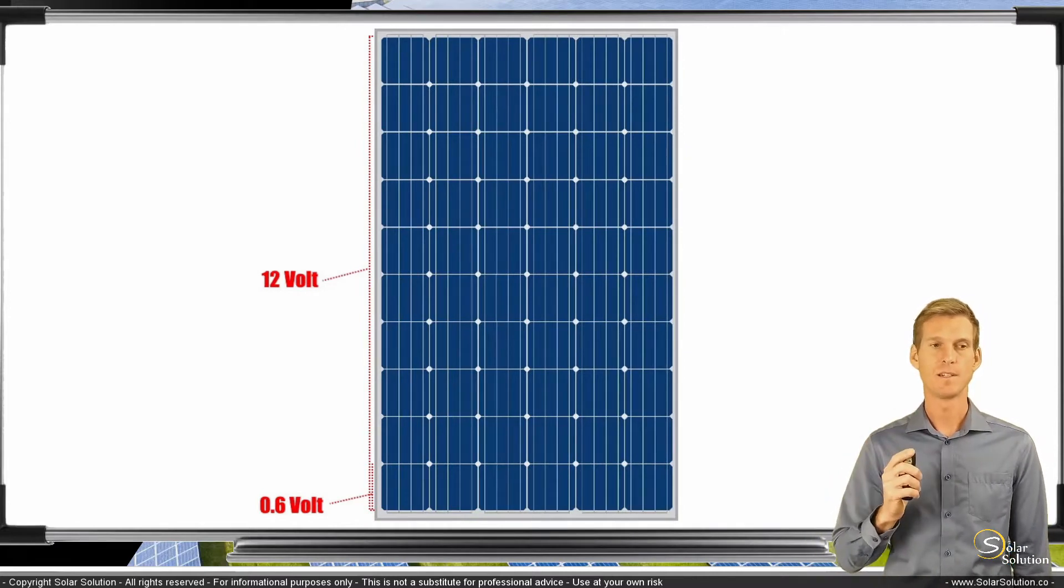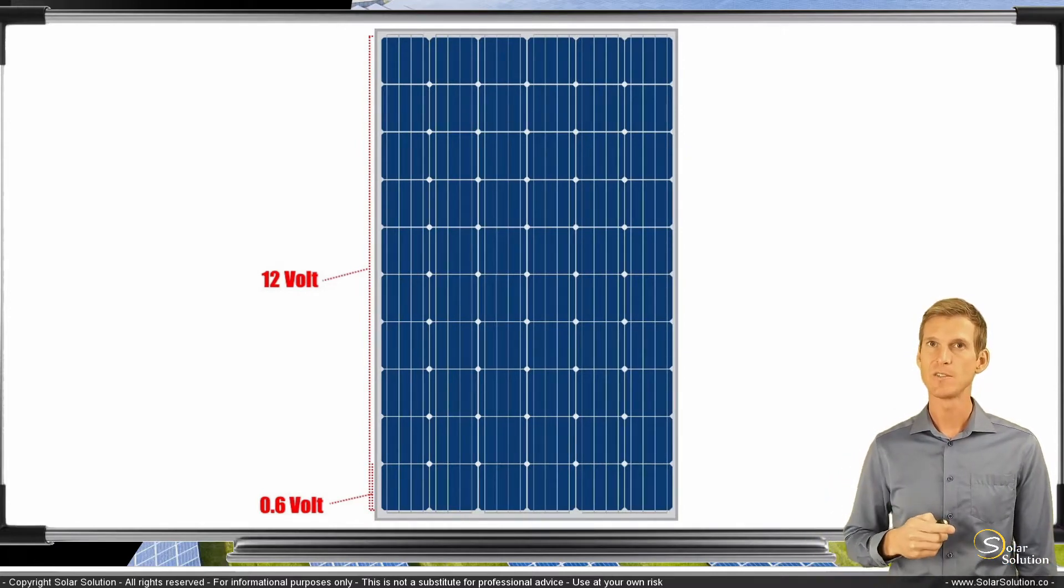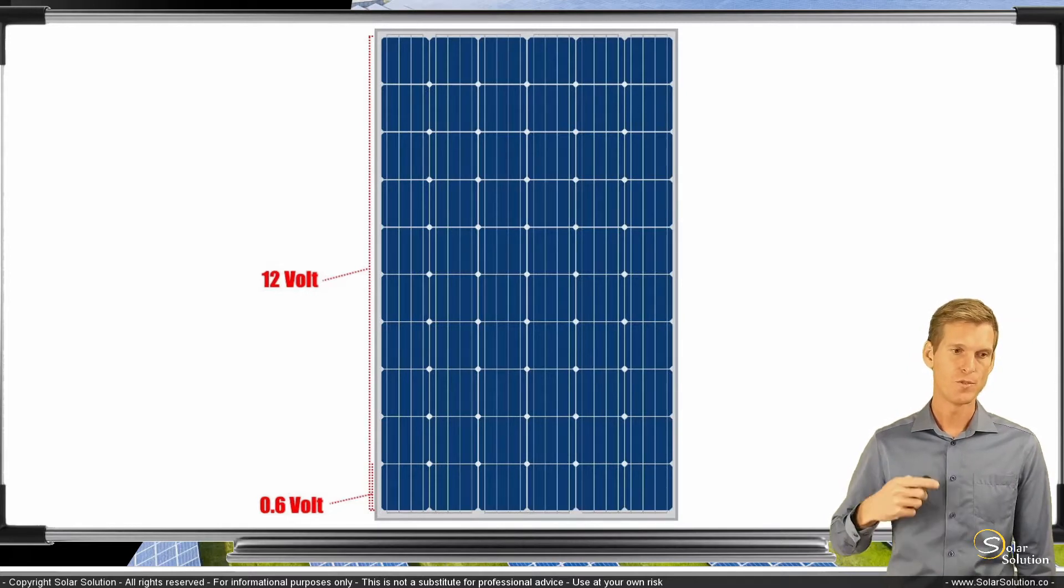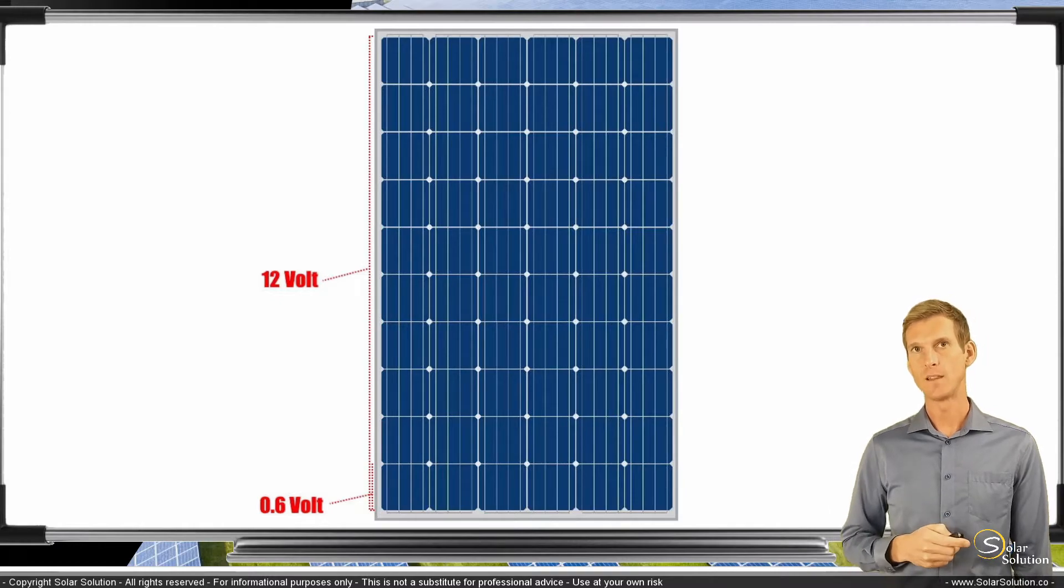which is made out of 60 cells. And these 60 cells together will produce an open circuit voltage and electrical pressure of approximately 36 volts.